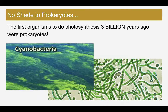No shade to prokaryotes — the first organisms to do photosynthesis three billion years ago were prokaryotes. Shout out to the prokaryotes. Without them, we wouldn't have an oxygenated atmosphere. Prokaryotes are oftentimes the basis of our food webs and food chains. We have photosynthetic prokaryotes like cyanobacteria.